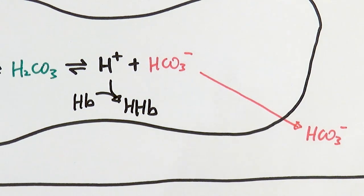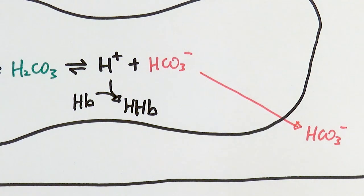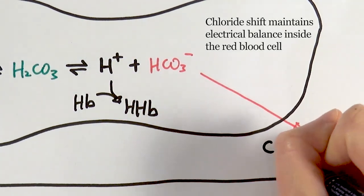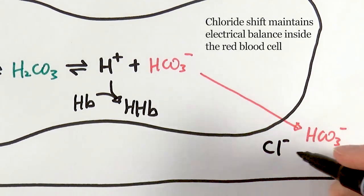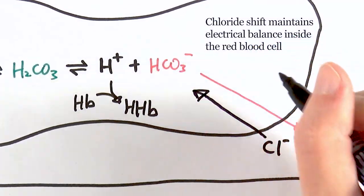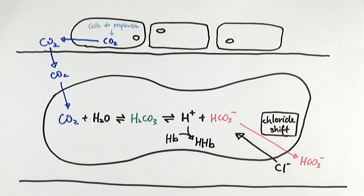Now we have a different problem: the hydrogen carbonate ions have been transported outside the red blood cell, so the charges are no longer balanced — the inside becomes relatively more negative. To counteract this, we have what's called the chloride shift, where Cl⁻ ions that are normally in the plasma are transported into the red blood cell to balance the charges.